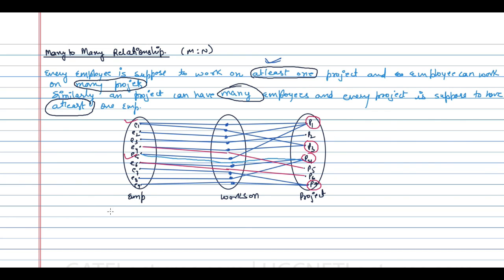Now we can determine the cardinality ratio and participation. The cardinality of employee is N, since an employee can participate in more than one relationship. The participation of employee is one, since every employee must work on at least one project. Similarly, the cardinality of project is M, the participation of project is one, and the degree of the 'works on' relationship is two.